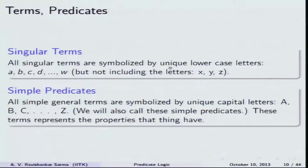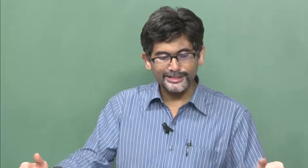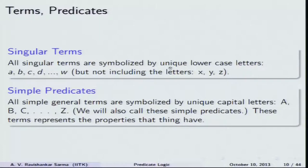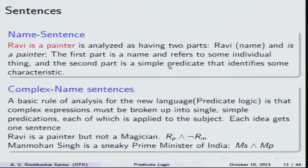Singular terms are usually represented by individual constants a, b, c, etc. Simple predicates such as mortality, in 'all beings are mortal,' represent a property attributed to all human beings — that is the predicate. In any simple grammatical sentence we have a subject and a predicate. Predicates take the central position in predicate logic. All simple general terms are symbolized by unique capital letters — A, B, C, etc. — which we call predicate letters. These terms represent properties that things have.